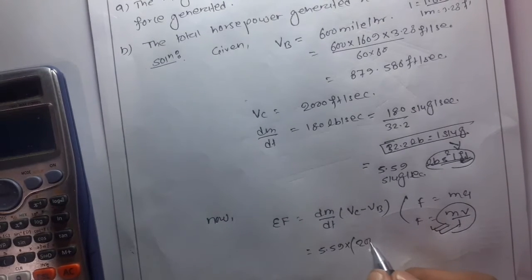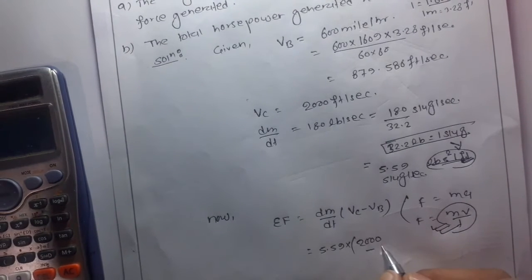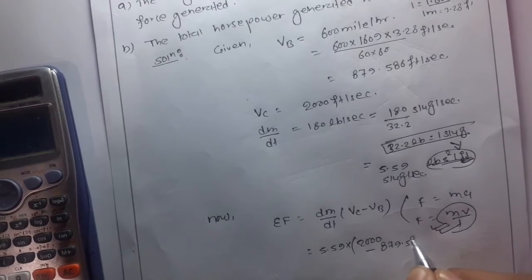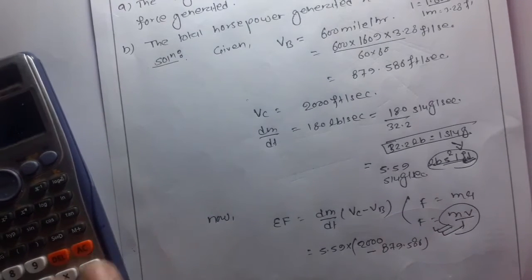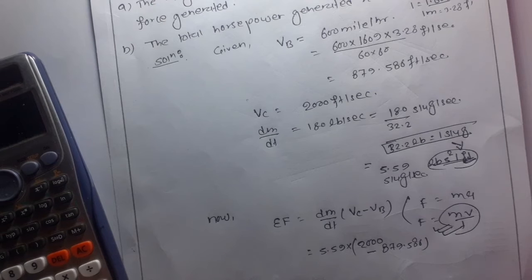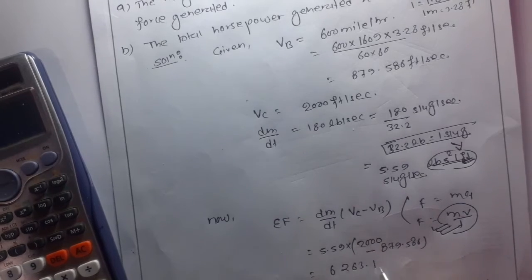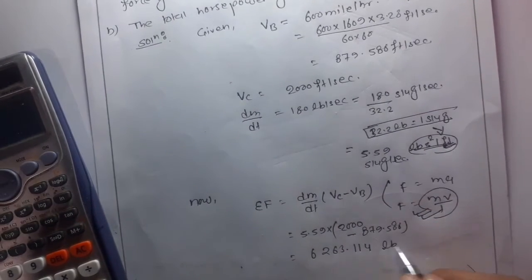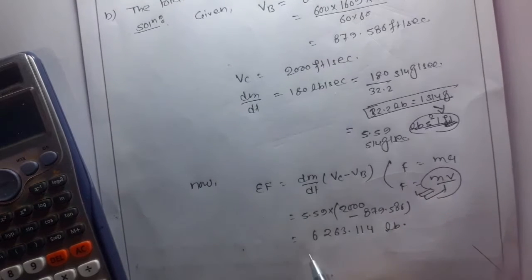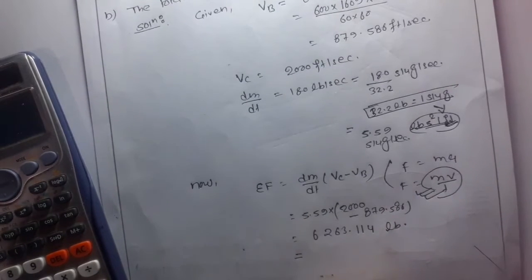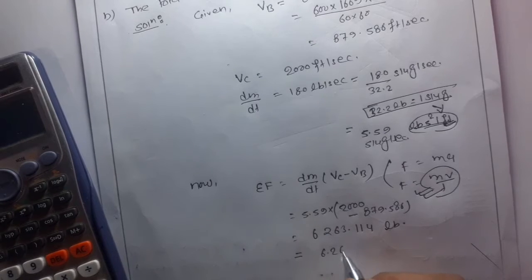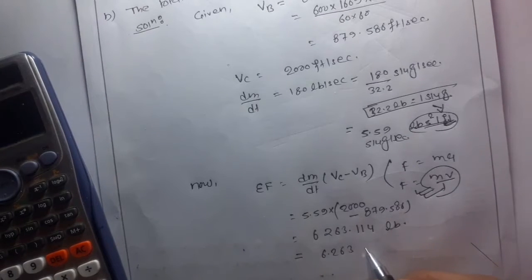So dm/dt is 5.59 times VC, which is 2000, minus VB, which is 879.586. This equals 6263.114 lb, or kips.